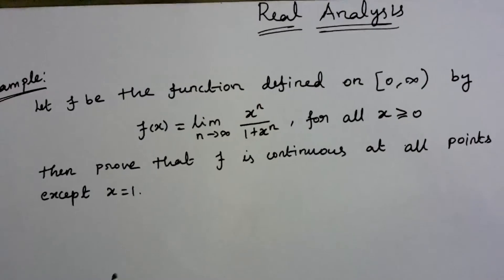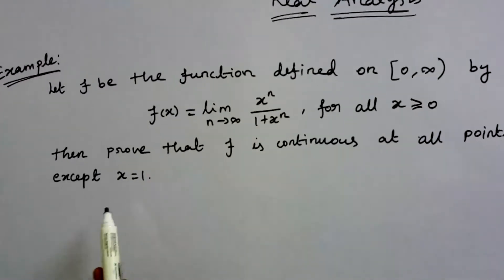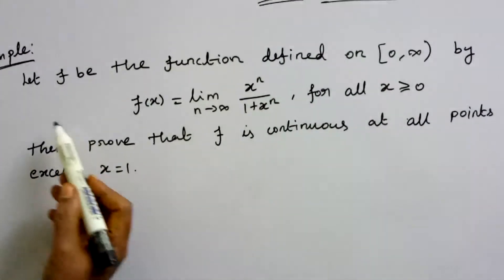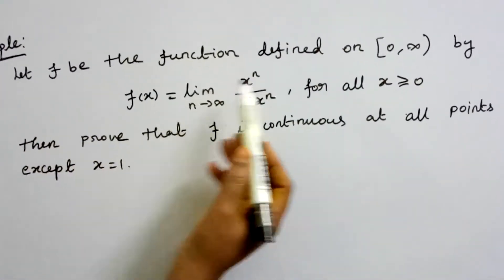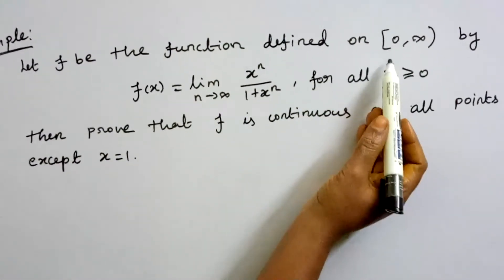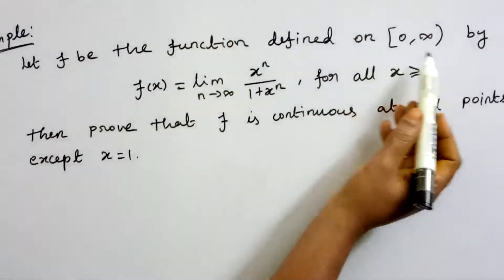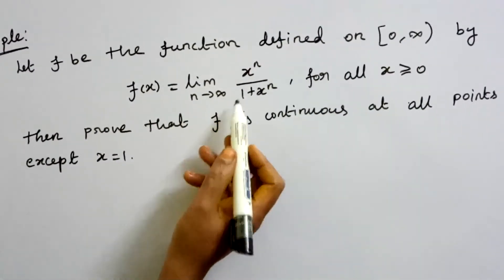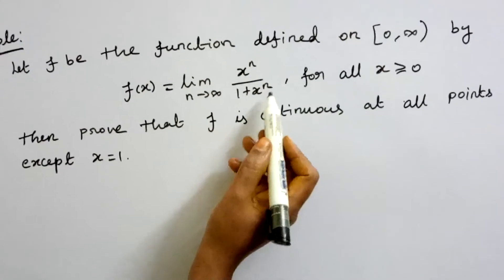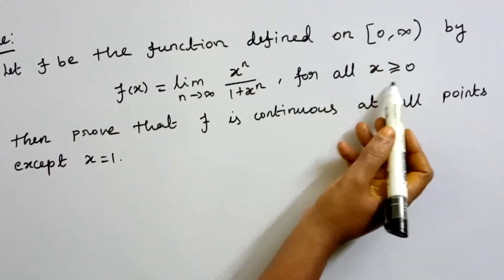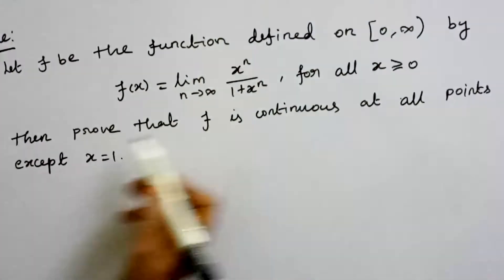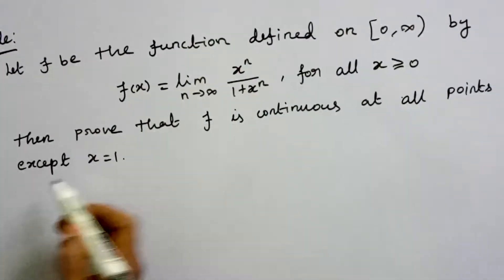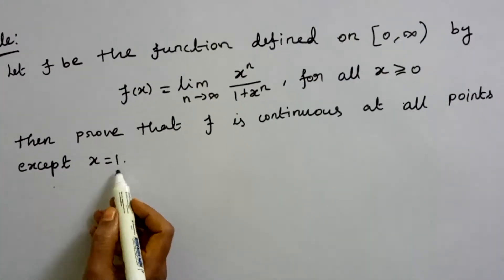Students, in real analysis, we will see examples. For the next example, let f be the function defined on the half-closed interval [0, ∞) by f(x) = lim(n→∞) xⁿ/(1 + xⁿ) for all x ≥ 0. Then prove that f is continuous at all points except x = 1.